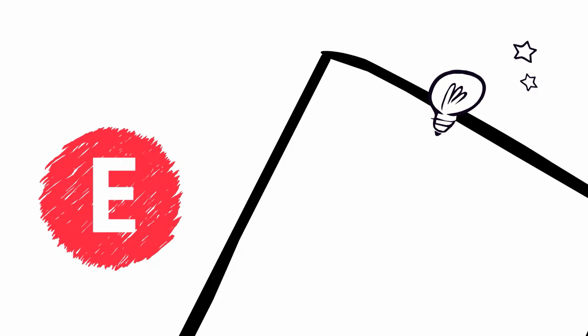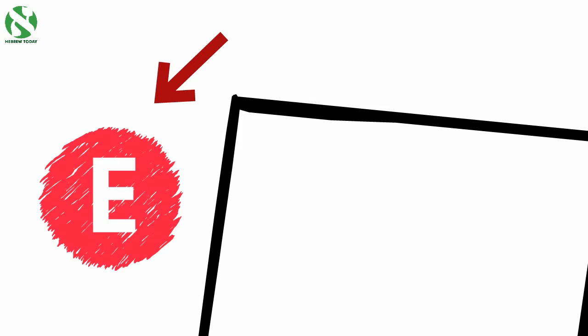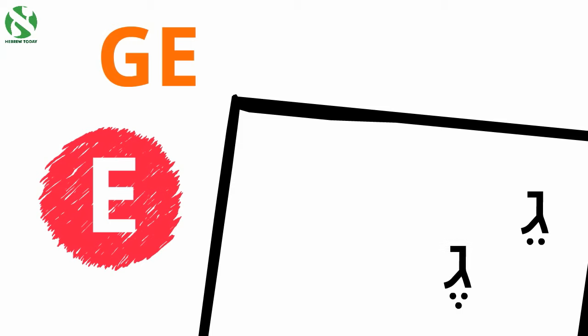Let's move on to the sound E like in the word red. If we want to make the sound GE, the Nikud would look like this or this. These two Nikud symbols are called Tzereh and Segol.